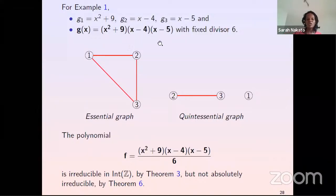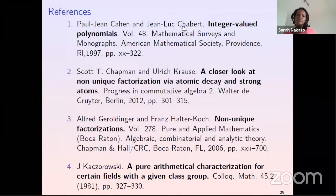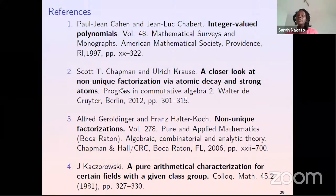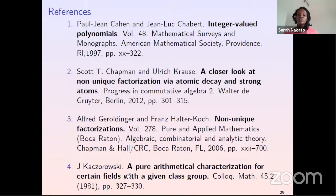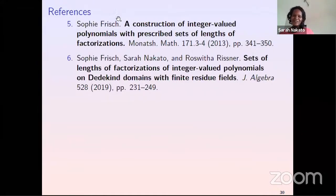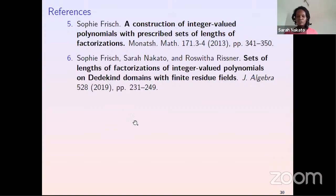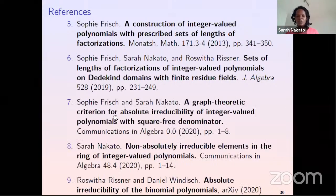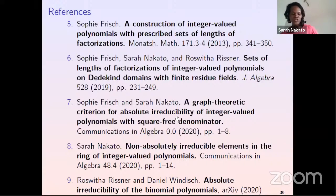These are some of the references. The first is the general reference for integer-valued polynomials. The second is where one can find the characterization of absolutely irreducible elements in rings of integers of number fields. The third is the general reference for factorization theory. The fourth is where the concept of absolute irreducibility started. Number seven is where the graph-theoretic criterion is. Thank you so much for your attention.